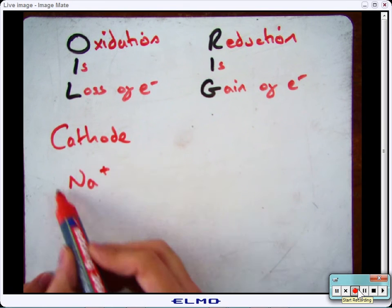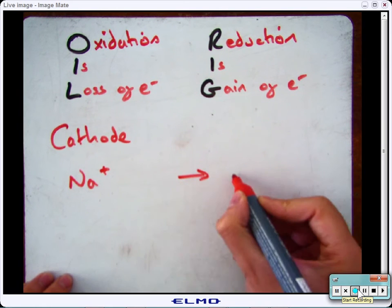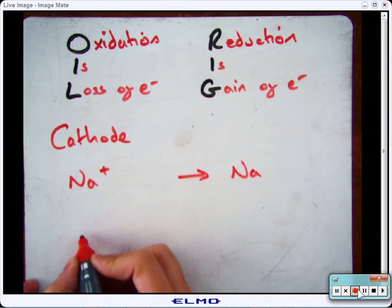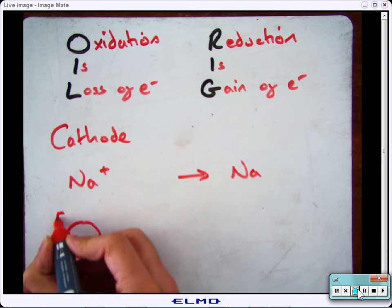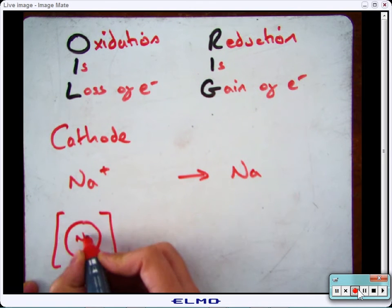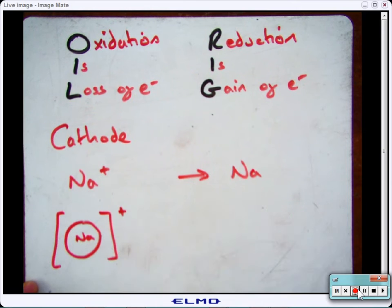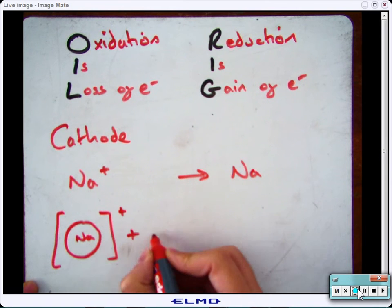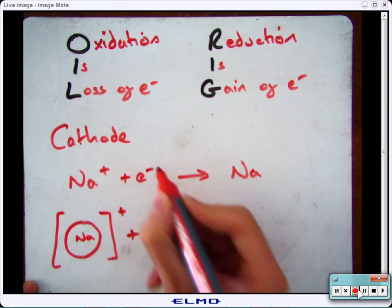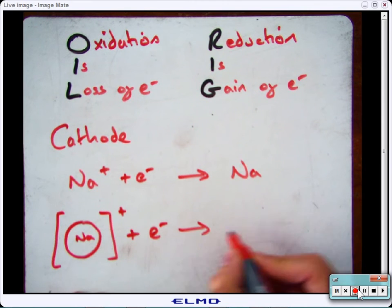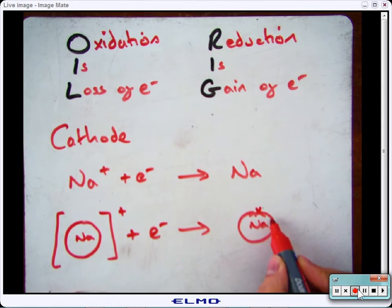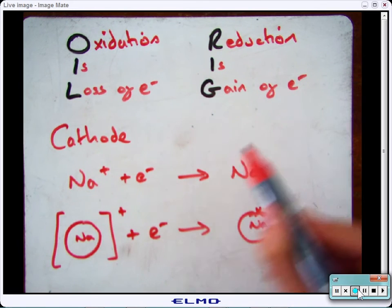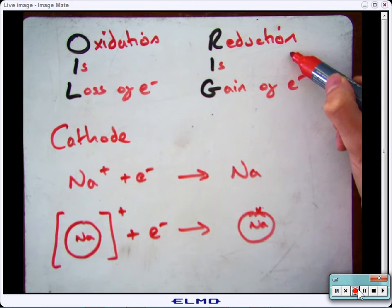So, at the cathode, your sodium ion turns back into the sodium metal. Now, if we have a look at the electronic configuration for that, I have to draw the outer shell. Sodium has lost an electron. So, to get it back, what I need to do is add an extra electron. So, to get it back to its normal self, I'm adding an electron back on to give it its normal state. So, it has gained an electron, therefore it is reduction.